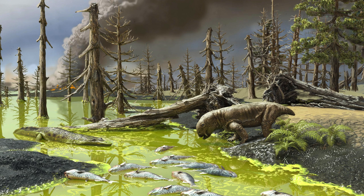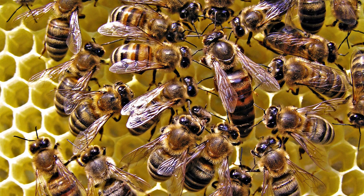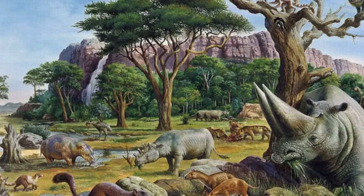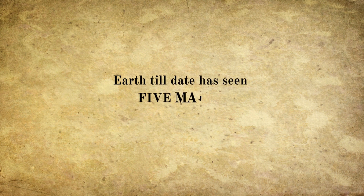Mass extinction results in wiping out a large percentage of species, leading to the loss of biodiversity. Each ecosystem stands in balance through the roles of key species, like bees for example. Extinction of key species could create an imbalance in ecosystems that would result in ecosystem collapse, affecting other species that depended on them. Following a mass extinction, recovery can take millions of years, with new species evolving to fill the niches left vacant by the extinct species.